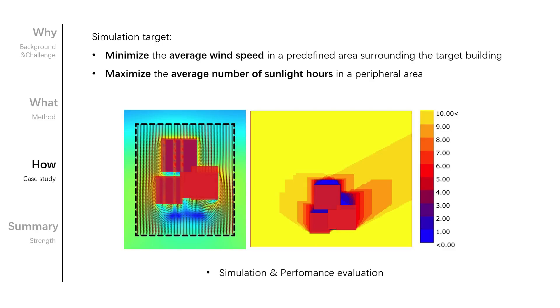For the performance evaluation, both pedestrian level wind speed and sunlight hours were chosen as the main performance indicators. And we use SSIEA to achieve a good balance between design diversity and fitness improvement. The simulation target is to minimize the average wind speed in a predefined area surrounding the target building and maximize the average number of sunlight hours in a preflow area.